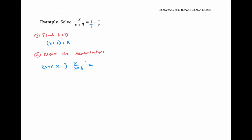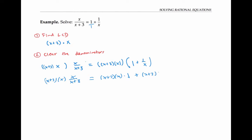I multiply it on the left side of the equation, and I multiply by the same thing on the right side of the equation. Since I'm doing the same thing to both sides, I don't change the value of the equation. Multiplying the least common denominator on both sides is equivalent to multiplying it by all three terms in the equation. I'll distribute the right side to get x plus three times x times one, plus x plus three times x times one over x.